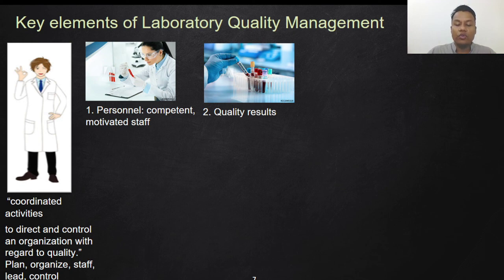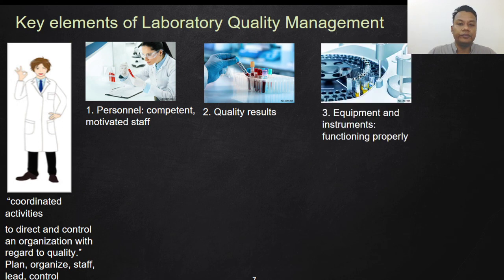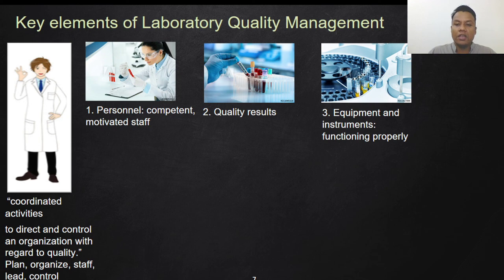Third, we can do a delta check — comparing today's result from the patient with their previous results to see the pattern. The third key element is to have very good equipment and instruments functioning properly. This can be achieved by purchasing the right equipment, always performing QC checks, ensuring calibration is in proper order, and performing the right maintenance.